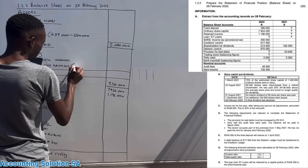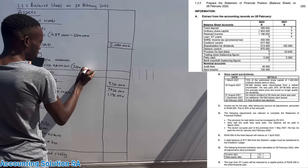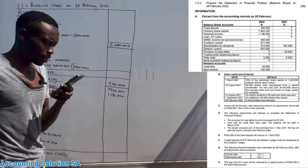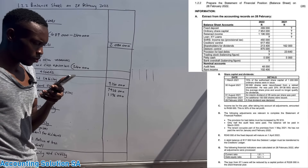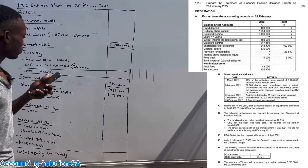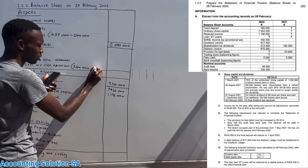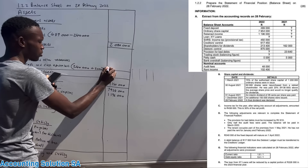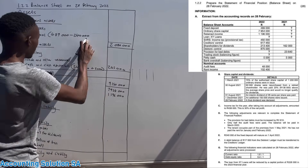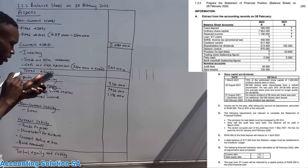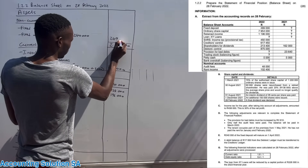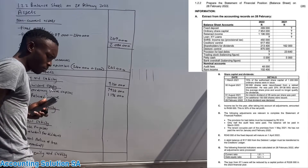We add 240,000 to cash and cash equivalents. Cash and cash equivalents also includes petty cash of 5,000, so adding everything together gives us 245,000 closing balance. Combining all items, we get 249,000 for cash and cash equivalents.